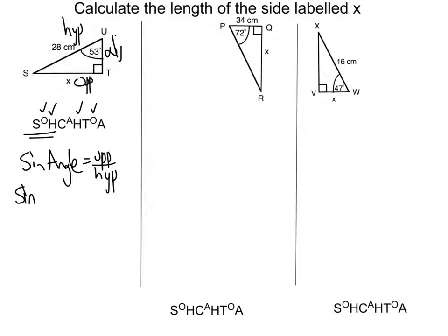So in this, the sine, the angle is 53, sine 53. Op is x, and the hype is 28. Now what I need to do is move this 28.